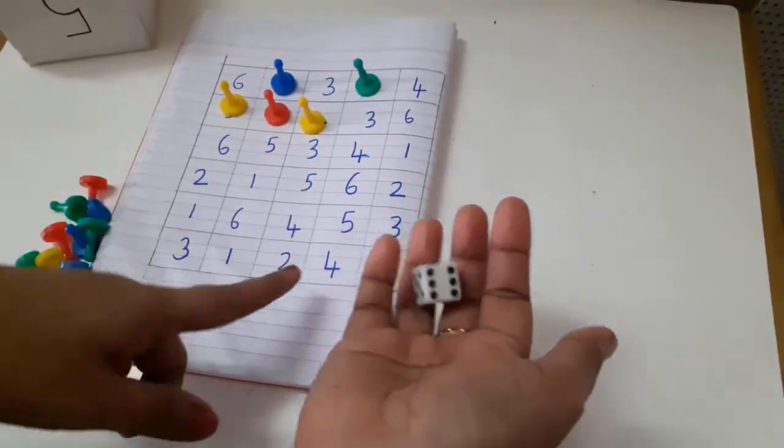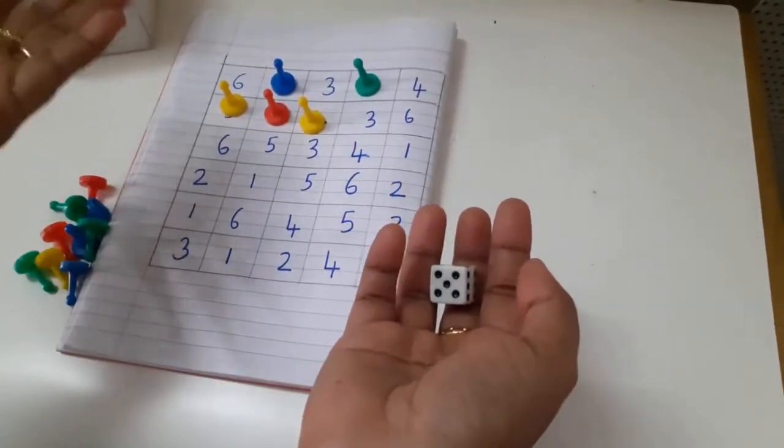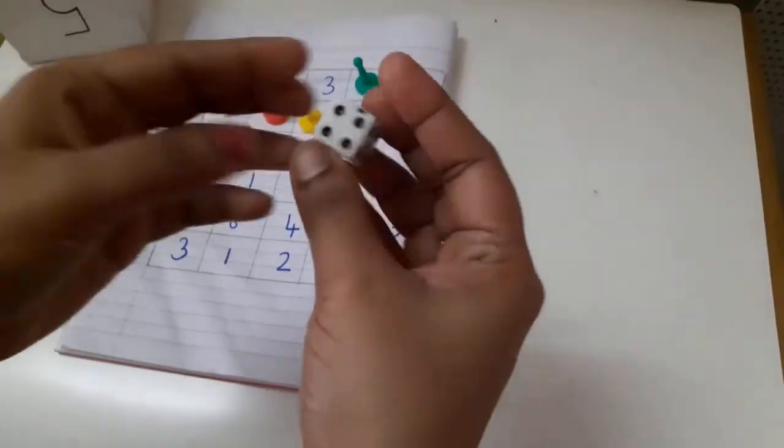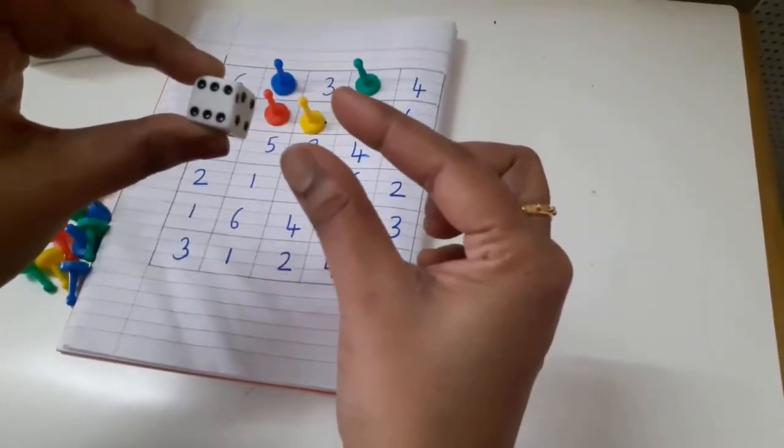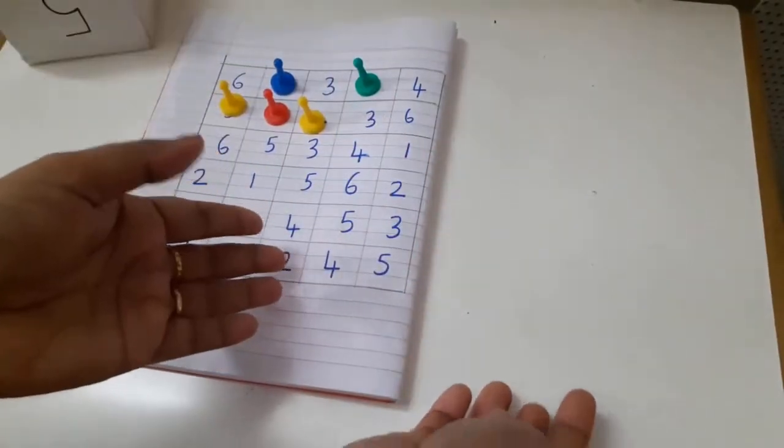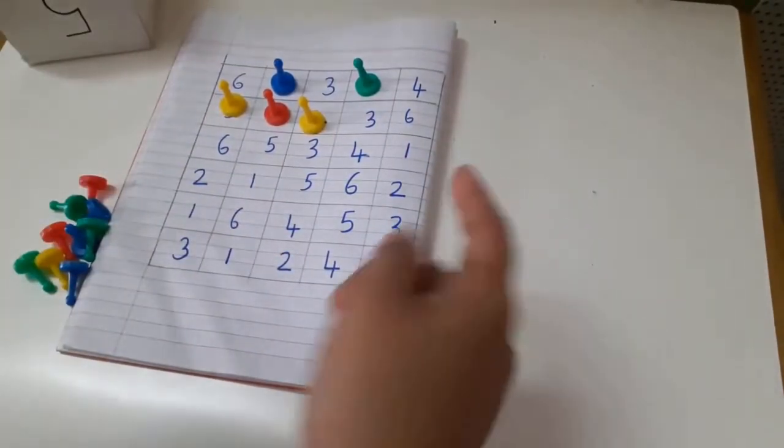One more thing - if your kid is able to count more than six, what you can do is give them double dices, one more dice like this. You can tell them to roll it together and you can write numbers up to 12 in these boxes.